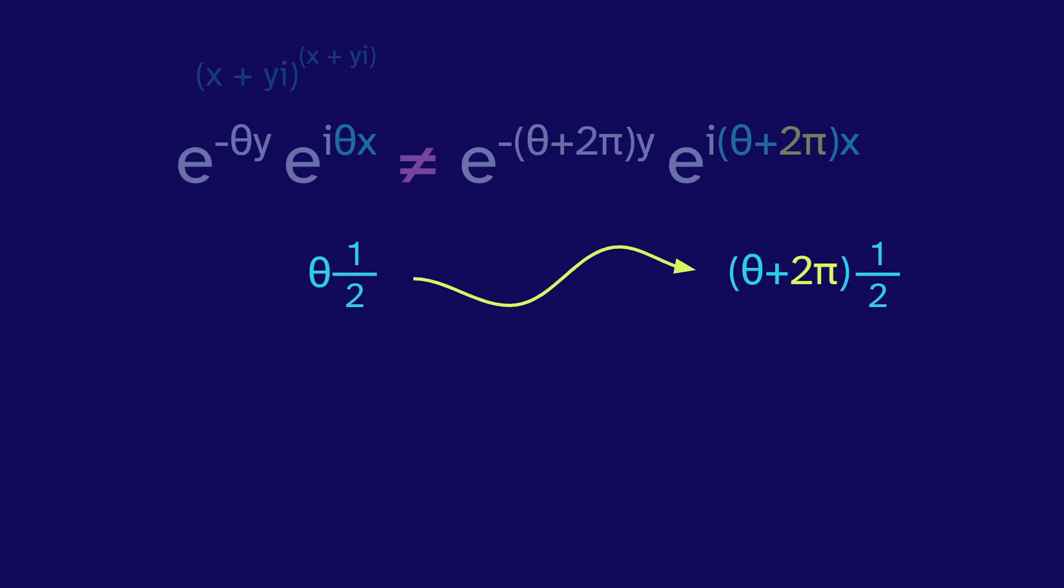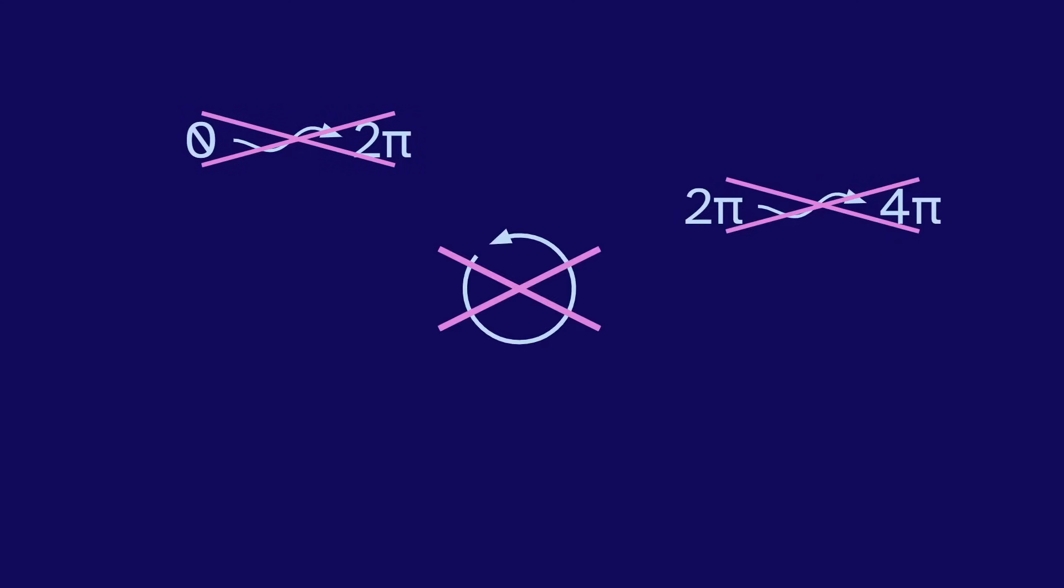If x is a half, this will add pi to the resulting angle, taking it halfway around the circle. So an extra lap has moved the point. The choice of angle matters. To get the full answer of a circle to the power of a circle, we can't just look at angles 0 to 2 pi, or 2 pi to 4 pi, or any other single lap.